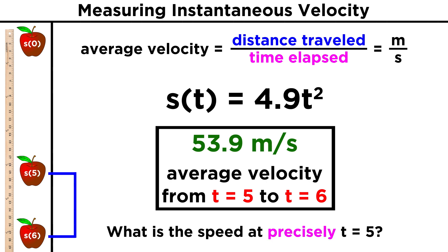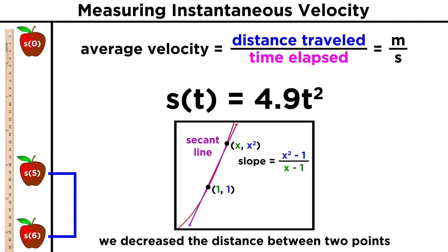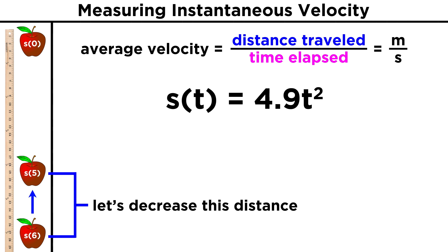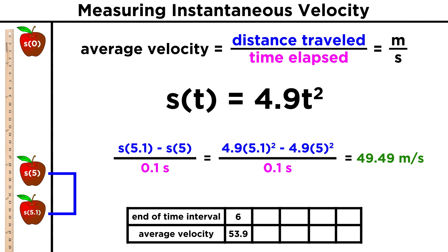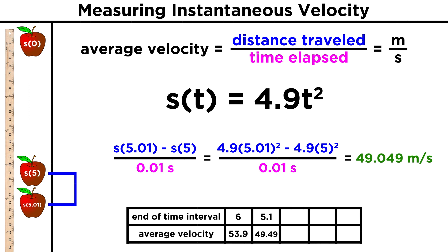But remember, we don't want an average speed — we want the precise speed at a precise instant. Just like the way we nudged the second point in the line closer to the first until we got the tangent line for the curve, let's nudge the end of this time interval closer and closer to five seconds. We can use five and 5.1 to get the average velocity over this tenth of a second, and we get 49.49 meters per second. Then we can use five and 5.01 to get the average velocity over this hundredth of a second, and continue to get even narrower from there.